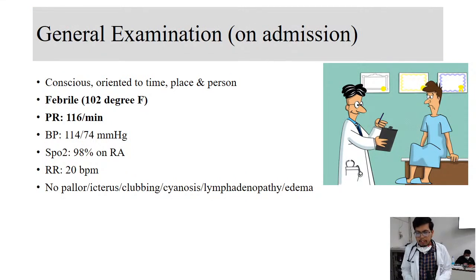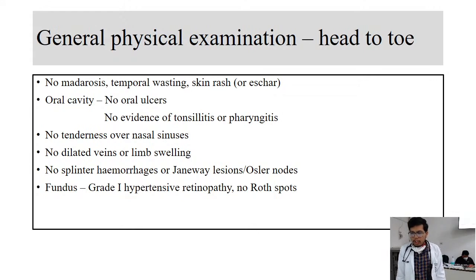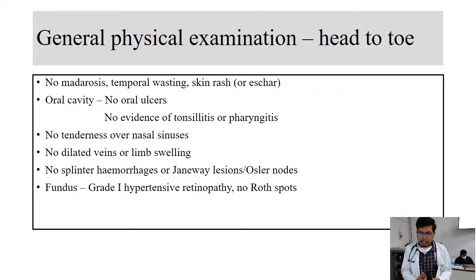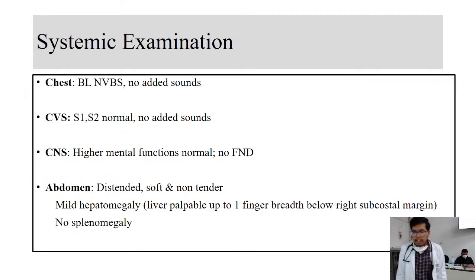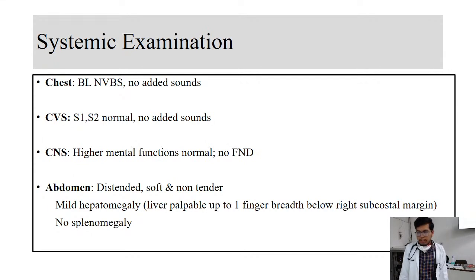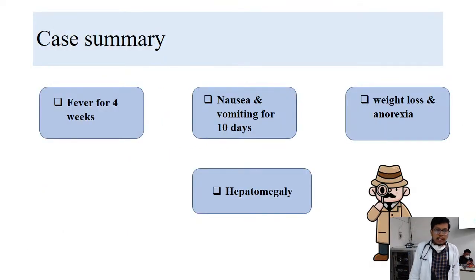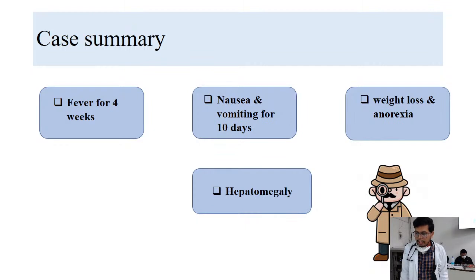On general examination, the patient was febrile at 102°F with slight tachycardia and tachypnea, likely due to the febrile illness. Head-to-toe examination revealed no skin rash, scar, temporal wasting, oral cavity abnormality, paranasal sinus tenderness, dilated veins, limb swelling, splinter hemorrhages, Janeway lesions, or Osler nodes. Fundus examination revealed only grade one hypertensive retinopathy. All systems were up to the mark, except for mild hepatomegaly with the liver palpable one finger-breadth below the right costal margin.